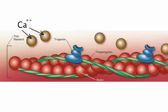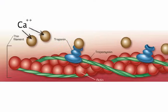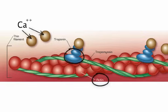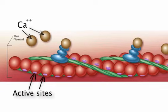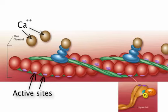The calcium ions will now bind to the troponin of the sarcomere's thin filaments. The main protein of the thin filament is called actin. This binding causes the troponin-tropomyosin complex to change shape and move into a groove on the actin, which exposes active sites on the actin filament. The active sites are now available for binding to myosin heads, which are the main protein of the thick filament.